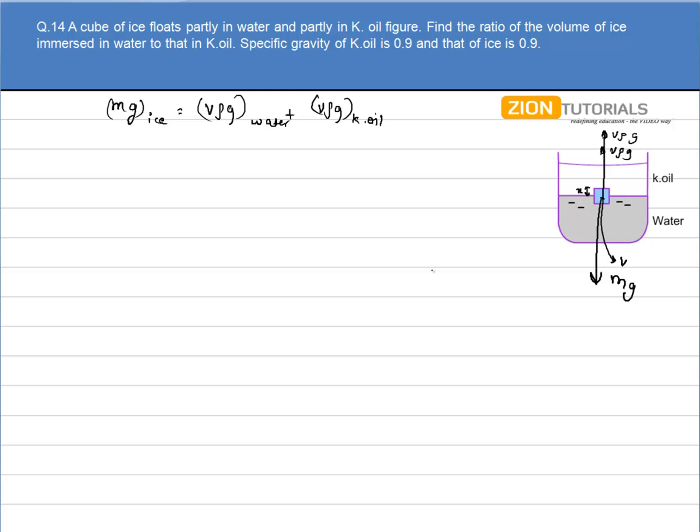Now I can also write that the volume of ice, the total ice, will be equal to the volume that is submerged in water plus the volume that is submerged in kerosene oil.